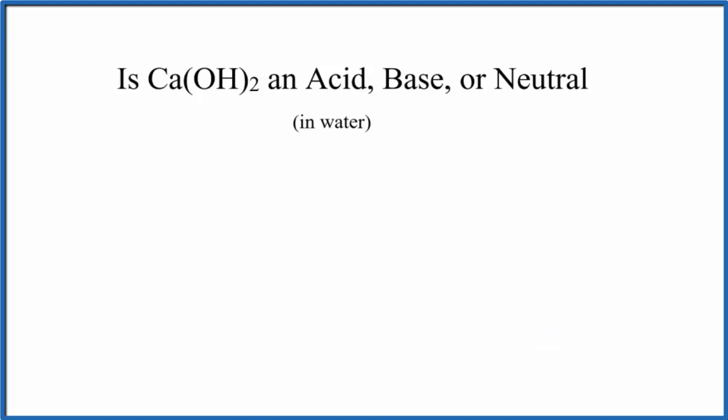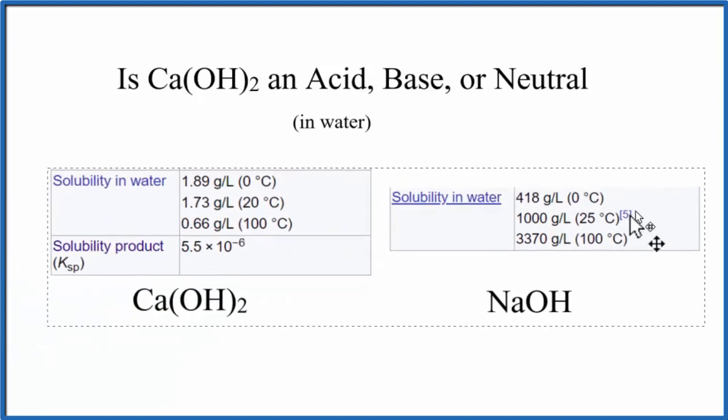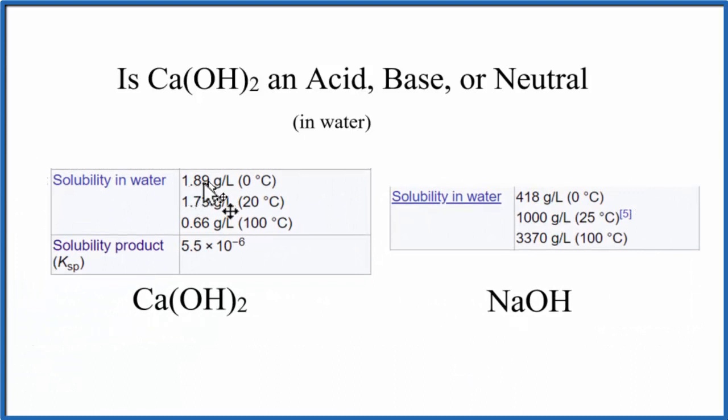With calcium hydroxide, it doesn't dissolve a whole lot. If we look at a table of solubilities here, we'd see for calcium hydroxide 1.89 grams per liter at zero degrees Celsius. It even has a Ksp because so little of it dissolves.